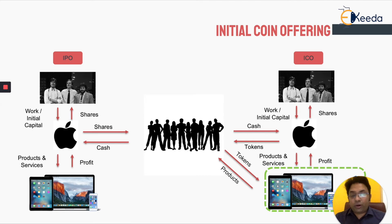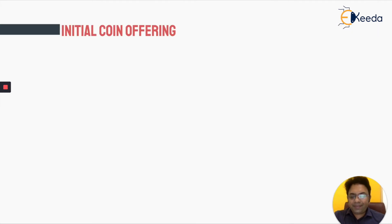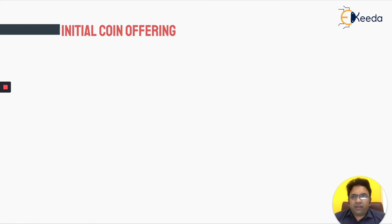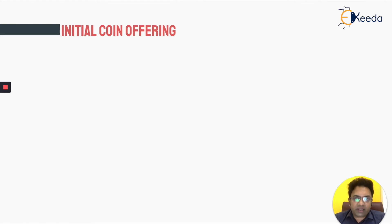Cash gives tokens and then with tokens you can buy products. All of this creates a beautiful economy within blockchain or within the company called Apple, and they created their own private currency using the concept of tokens. We'll see more about initial coin offering — how the value increases and all of these things. In the last slide we were able to see the initial coin offering with an example of a company called Apple: how IPO versus ICO works, and what is the use of this utility token.